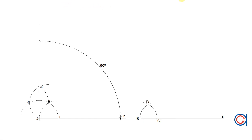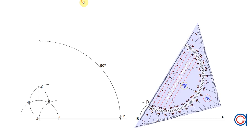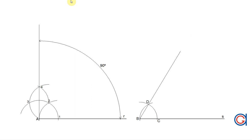As point D is the apex of an equilateral triangle BCD, therefore if we draw a line from point B through D it will form a 60 degree angle.